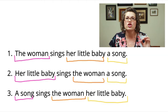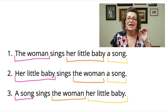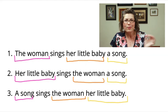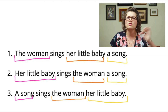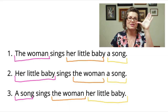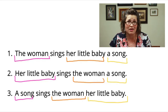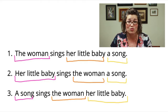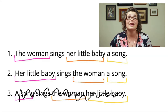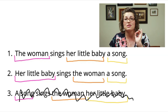English has very rigid word order, and this is very important because it is the complete opposite of German. In sentence number one, 'The woman sings her little baby a song' — this makes sense. In sentence number two, when we flip things around: 'Her little baby sings the woman a song' — this still makes sense, but we're saying something different. And in sentence number three, worst of all: 'A song sings the woman her little baby' — this rearranging doesn't even make sense.